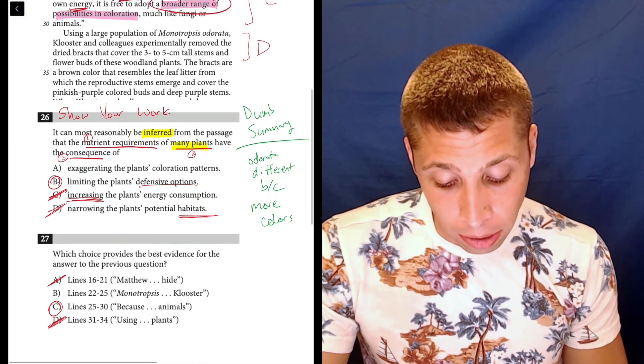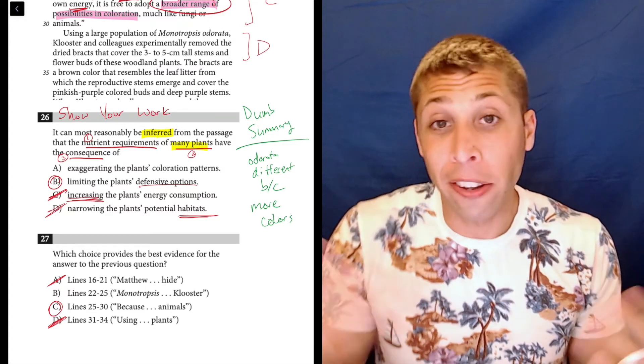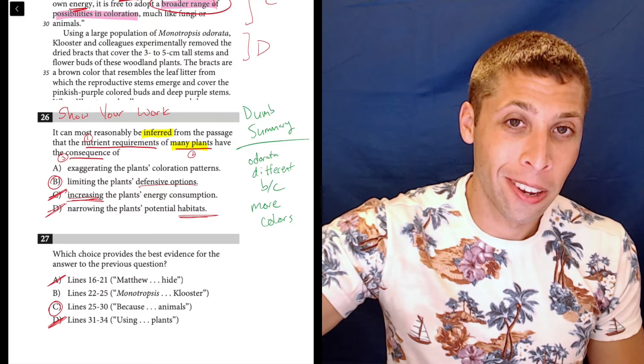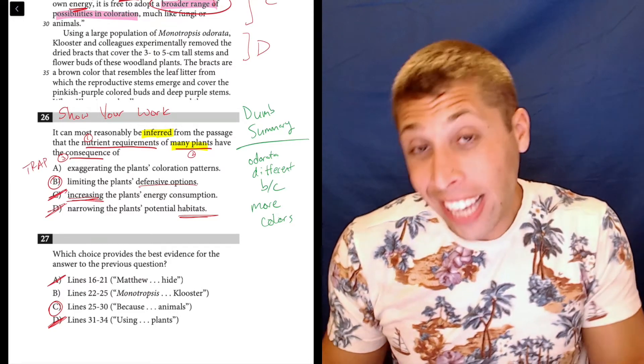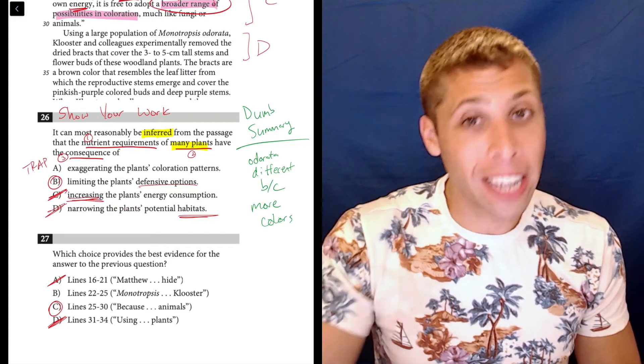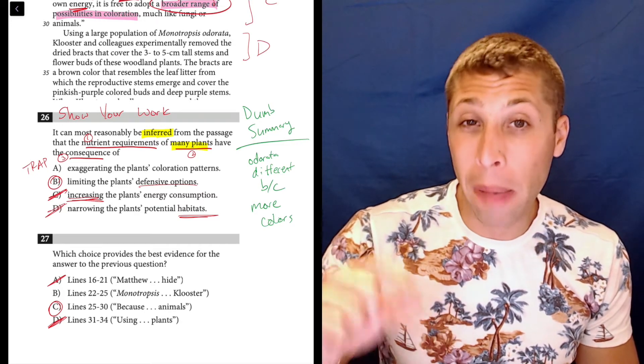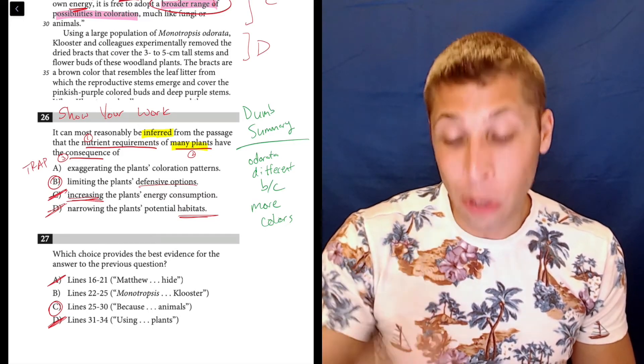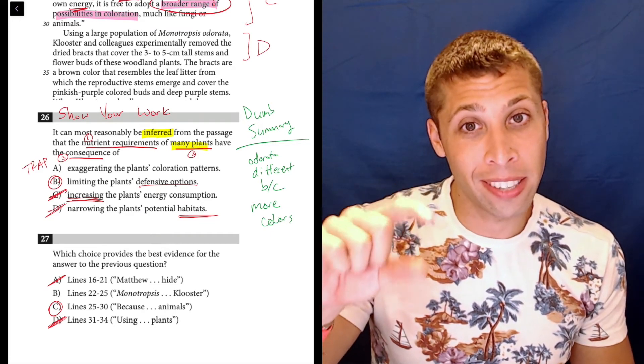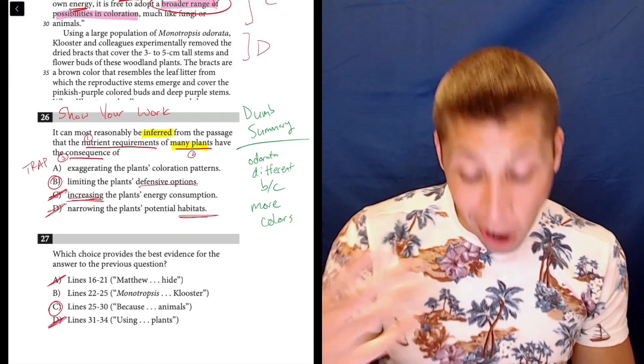The reason A is wrong, exaggerating the plant's coloration patterns, is the other plants are all green. There's nothing exaggerated about them. They're all the same color. And they're the same color because they all have to get their energy from the sun the same way. So there's no exaggeration of those other plants' color patterns. However, the reason this is a trap answer is, I guess in a way, there kind of is an exaggeration of the colors of the odorata plant. It can have a broader range of colors because it's getting its nutrients from somewhere else. So a different phrasing of this question probably would have had choice A as the answer. If the question was more about the odorata, I think that choice A is the answer. And that's what makes it a trap, is we're so used to reading about this one particular plant that that's what we think we're being asked about. But the question has done something sneaky and it's using this odorata almost as a counter example for all the other plants. And we have to kind of sense that and figure that out.